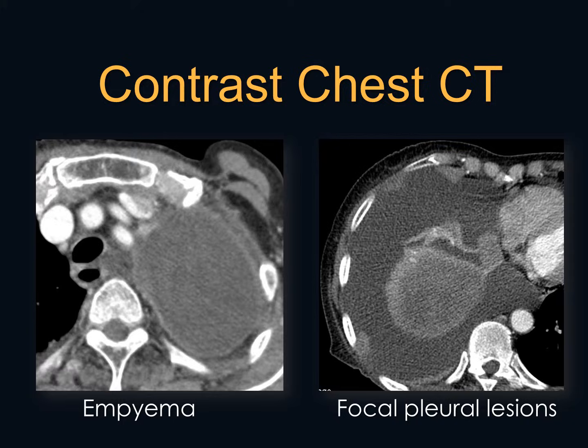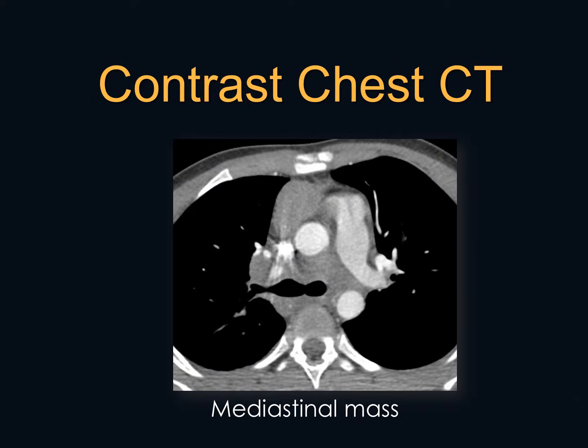Here are examples of how useful contrast is. On the left, a patient with empyema shows a rim of thickening and enhancement of the pleura, a sign we look for when suspecting empyema. On the right, a patient has focal pleural lesions — most commonly metastases — and without contrast we wouldn't be able to see all those enhancing nodules along the pleura indicating pleural metastases. In another patient with a mediastinal mass, contrast is essential to differentiate the mass from vessels and assess mediastinal invasion.